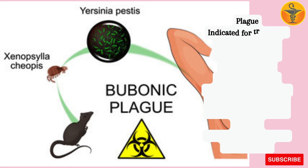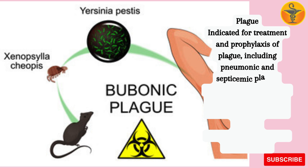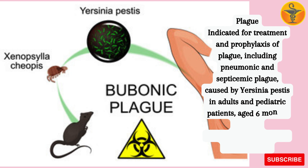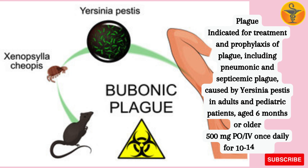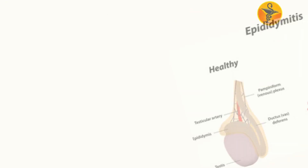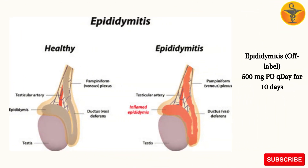Plague: Indicated for treatment and prophylaxis of plague, including pneumonic and septicemic plague, caused by Yersinia pestis in adults and pediatric patients aged 6 months or older: 500 mg oral or intravenous once daily for 10–14 days. Off-label — Acne vulgaris: 100 mg oral every 8 hours for 4 weeks. Epididymitis (off-label): 500 mg oral every day for 10 days.